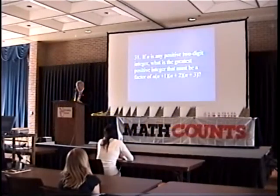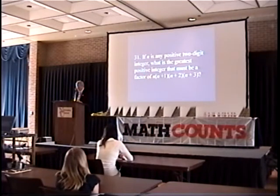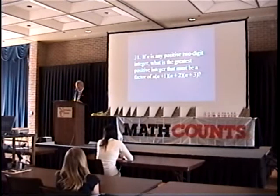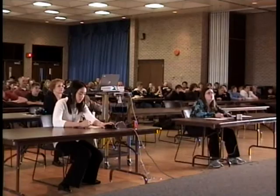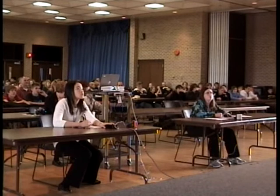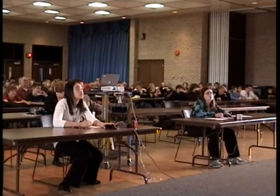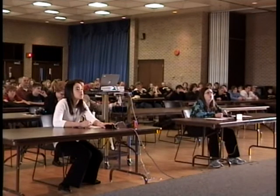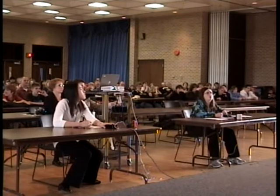If n is any positive two-digit integer, what is the greatest positive integer that must be a factor of n times (n+1) times (n+2) times (n+3)? Ingrid? 102. 102 is incorrect. Katie? 4. 4 is also incorrect. The correct answer is 24.